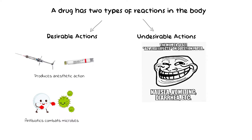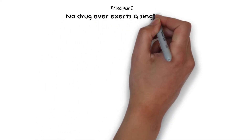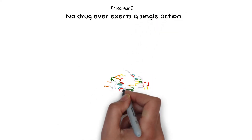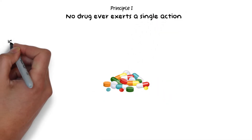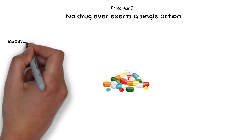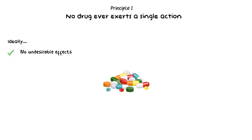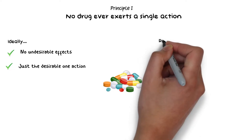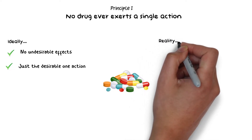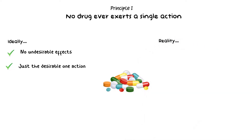There are many different principles of toxicology, but let's take some general principles and try to understand them. The first principle is that no drug ever exerts a single action. In an ideal situation, we want a drug to have no undesirable effects and produce just the desirable effect that we want. But in the real world, a drug can very rarely — if ever — achieve this, because no drug is specific enough to produce only one desired action and not others. So every drug has more than one action.